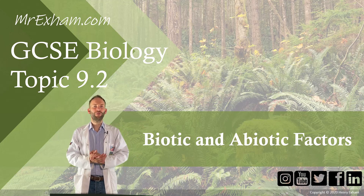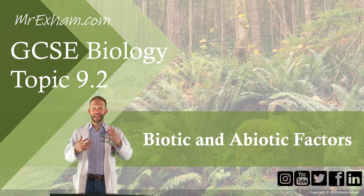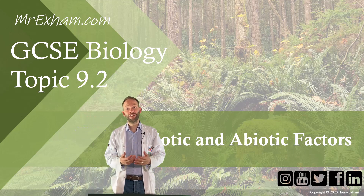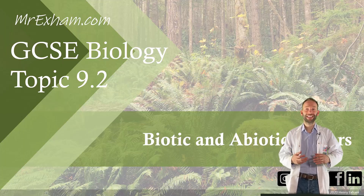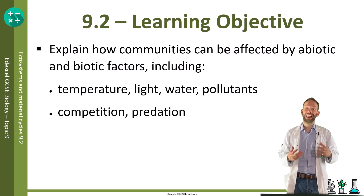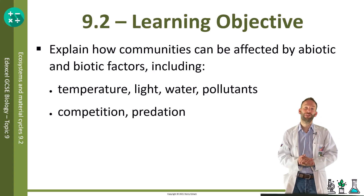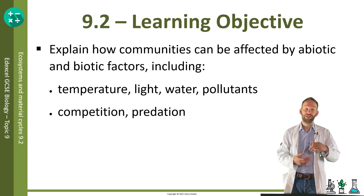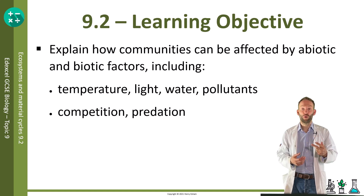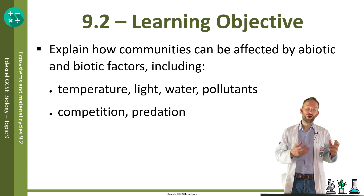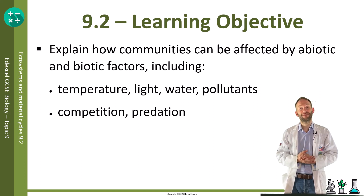Objective 9.2: Explain how communities can be affected by abiotic and biotic factors, including temperature, light, water and pollutants, and competition and predation.